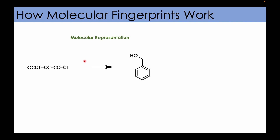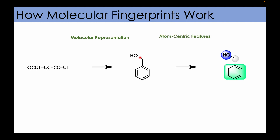The first step is to represent the molecular structure in a way that can be used for fingerprint calculation. This often involves converting the SMILES string into molecular objects or graphs using various algorithms. Then we identify the atom-centric features — characteristics associated with individual atoms such as atom type, presence of functional groups, or hybridization state.